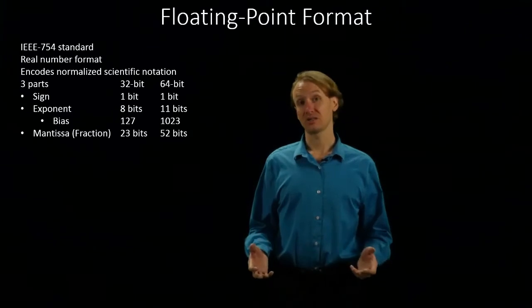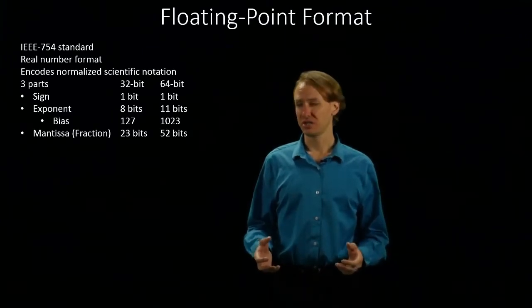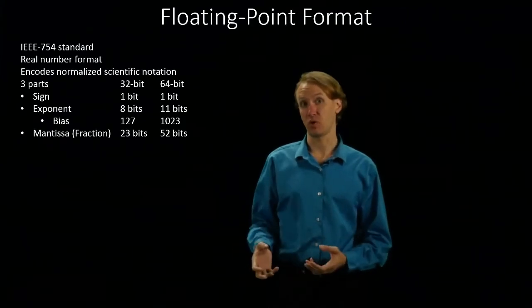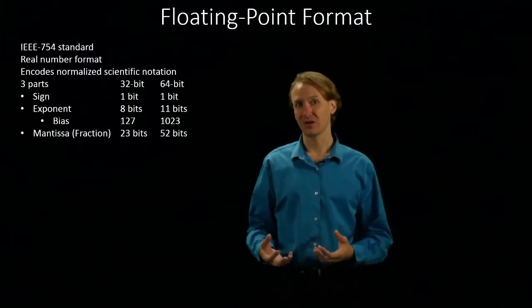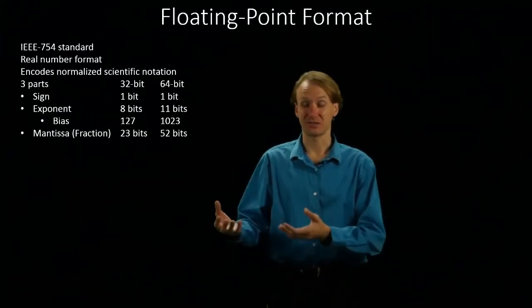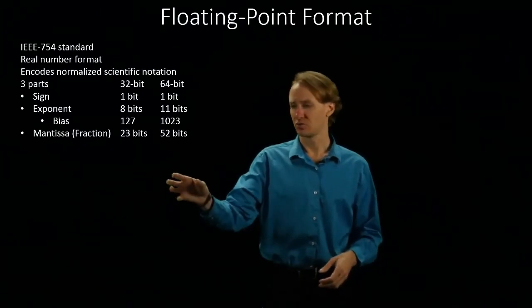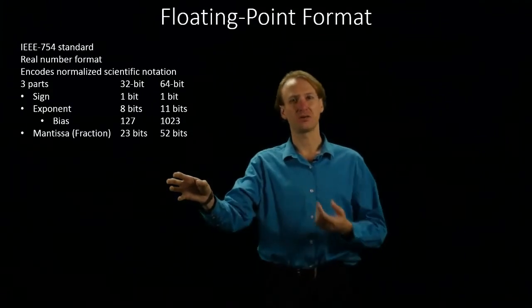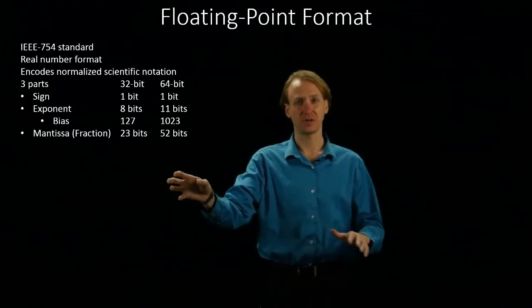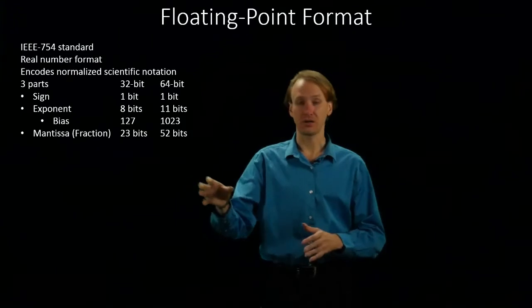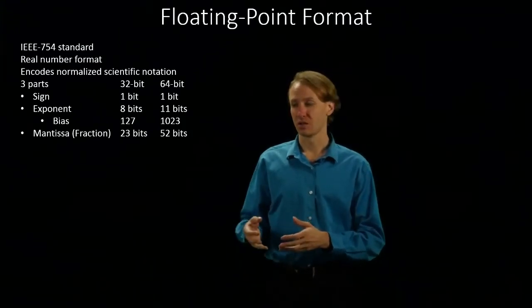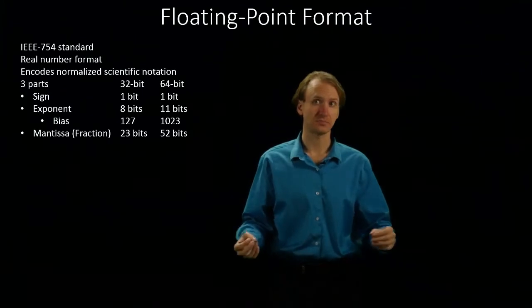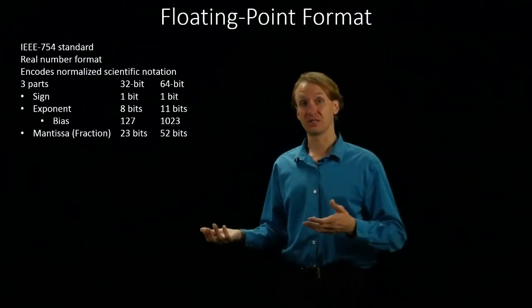In normalized scientific notation, we need to have exactly one non-zero digit ahead of the decimal point. So in binary, this means we've got to have a 1 up there. So since we always have a leading 1, there's really no reason to encode that in our format. We can just accept that it will always be there and not worry about writing it down. So instead, I just have to write down everything after the decimal point, and all of that will end up in the mantissa.